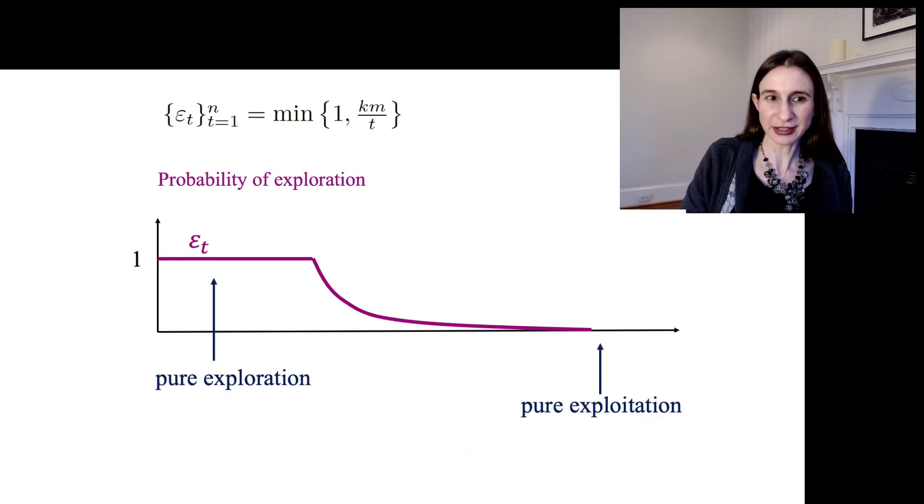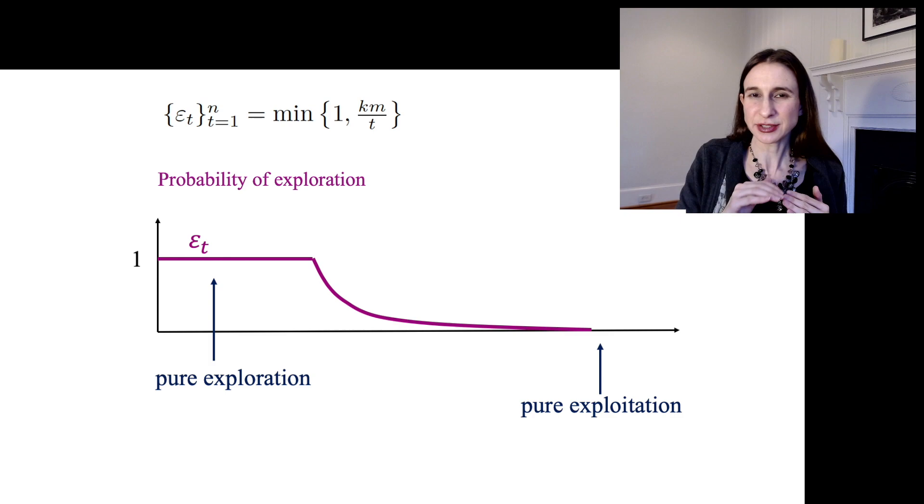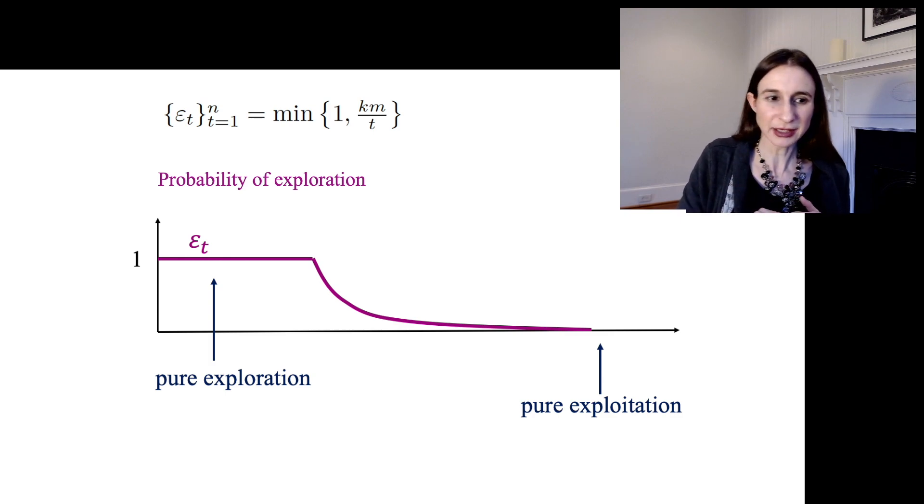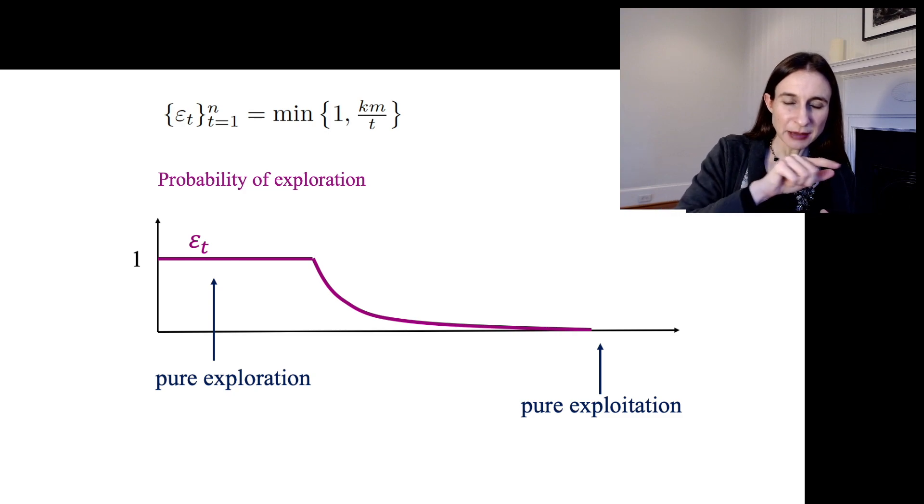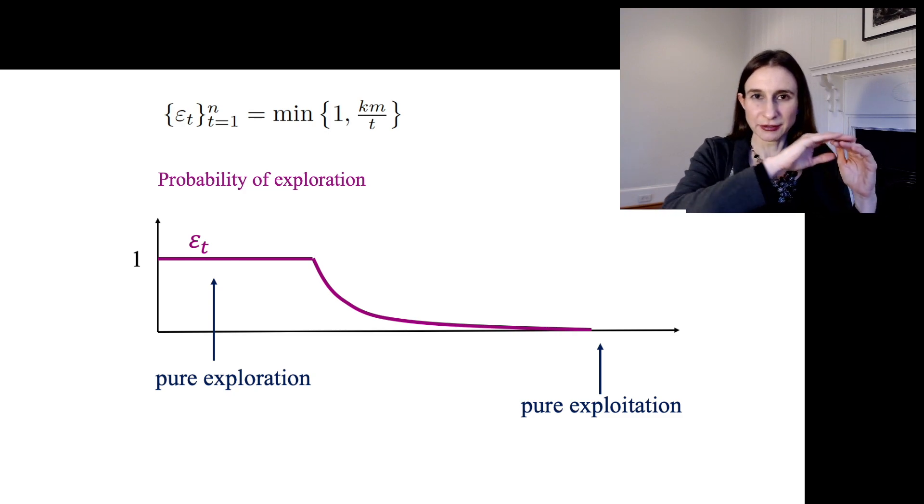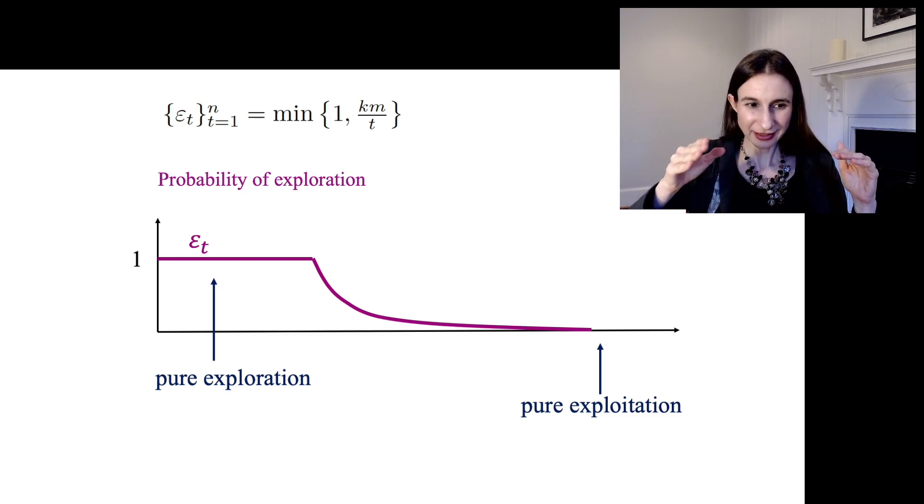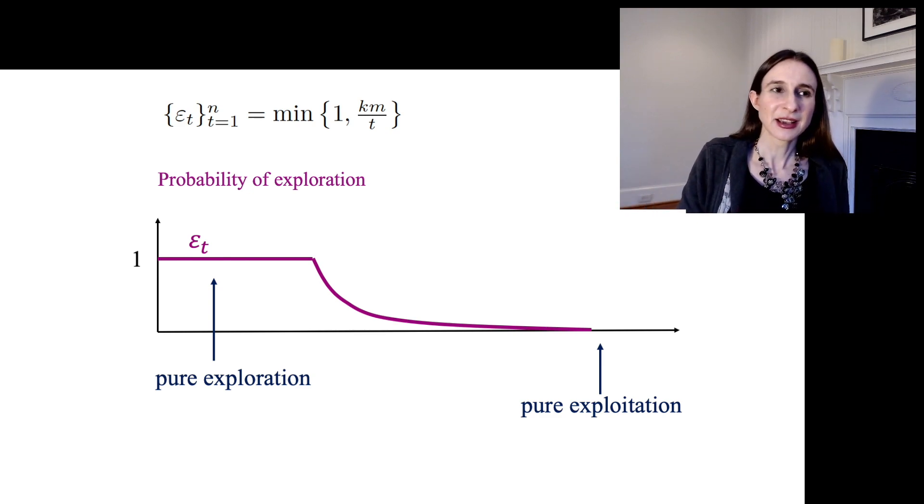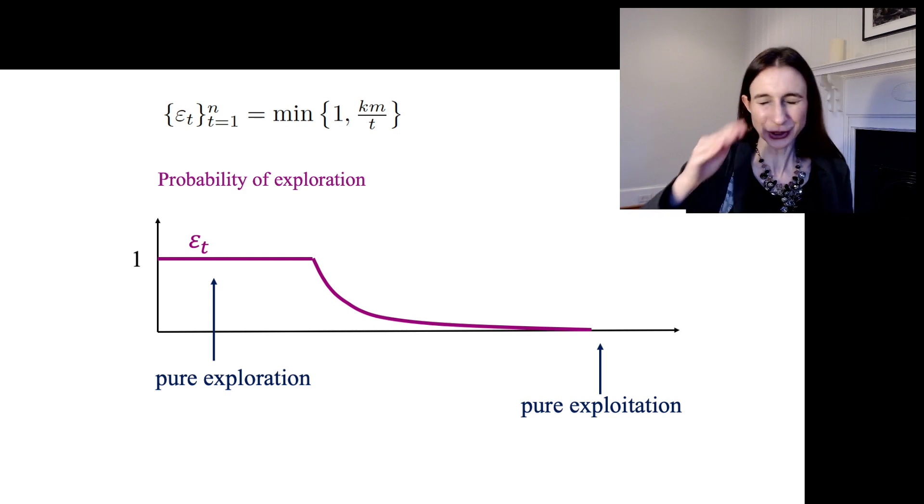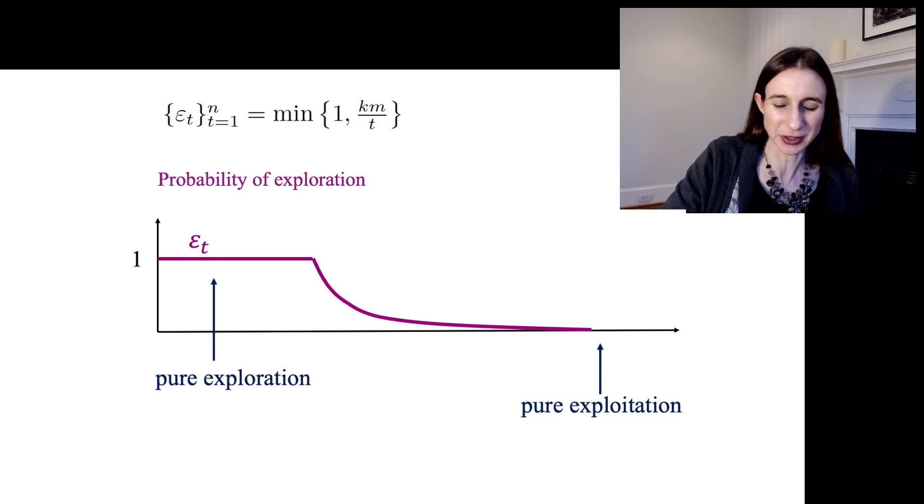I just want to point out again this ε_t here. So the bigger k is, the longer it takes for you to start exploiting, right? Because if k is very large, then that min will happen at 1 for a very long period of time, and then it'll start decaying. So the bigger k is, the more we will explore before we exploit, and the longer time it will take us to sort of just plain exploit.